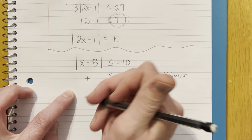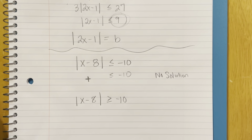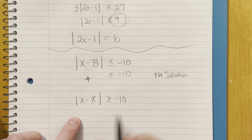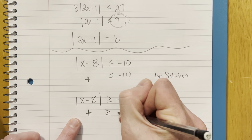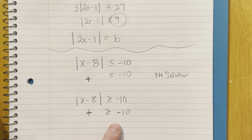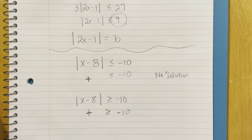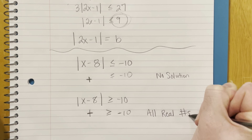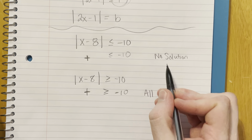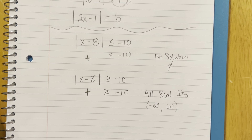In the same case, what if it had said greater than or equal to negative 10, or even just greater than? I'm always going to have a positive output, so we want to pause when we have that negative and think about whether this is going to be no solution. If I always get a positive, that positive is always greater than negative 10, so this has all real numbers as the solution — from negative infinity to positive infinity.